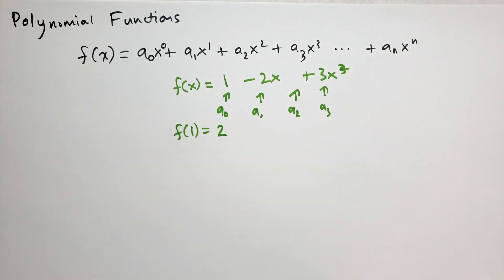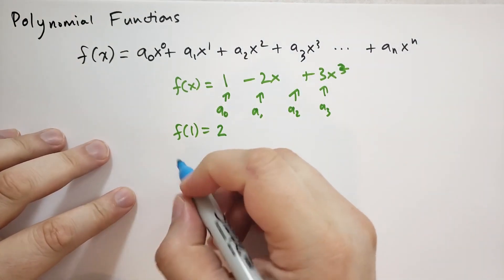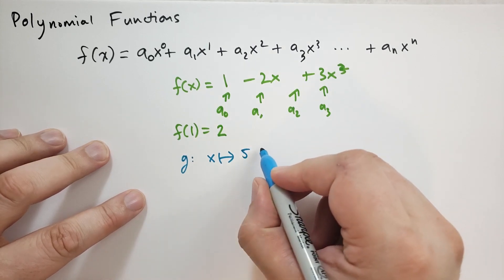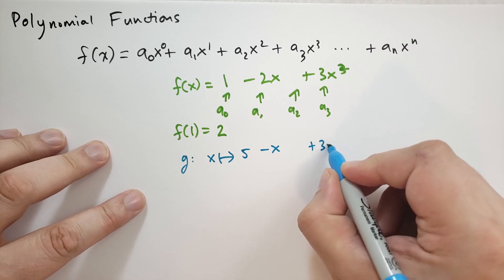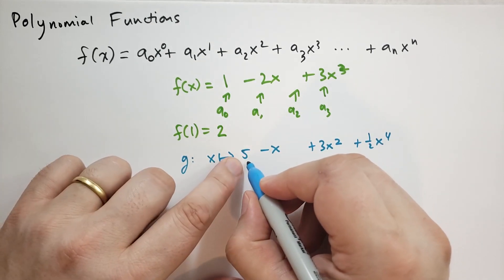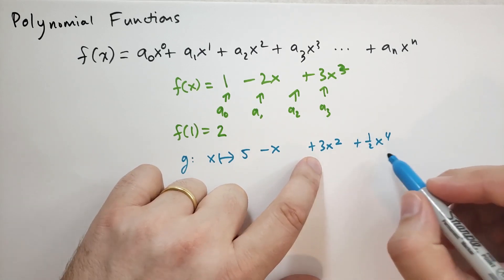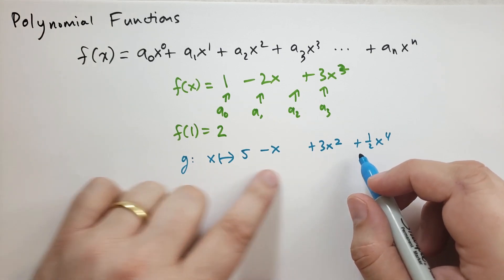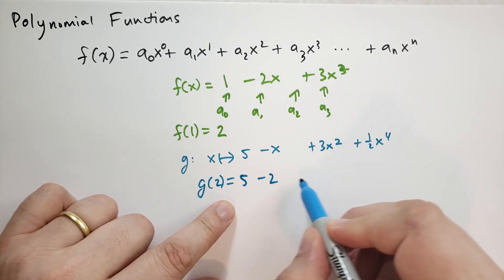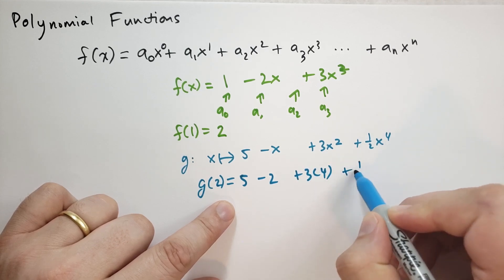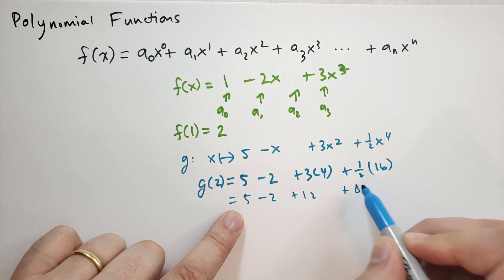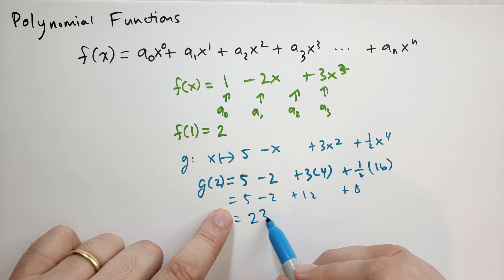As another example, let's use blue. We define g(x) = 5 − x + 3x² + ½x⁴. Here a₀ = 5, a₁ = −1, a₂ = 3, and a₄ = ½. There is no a₃ term, so a₃ = 0. If we evaluate g at x = 2: 5 − 2 + 3(4) + ½(16) = 5 − 2 + 12 + 8 = 23.